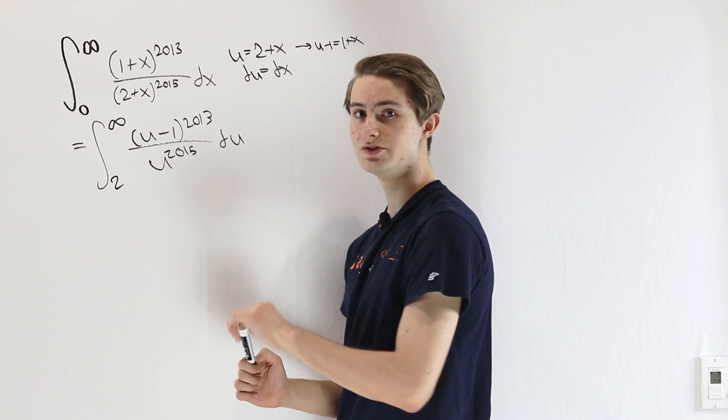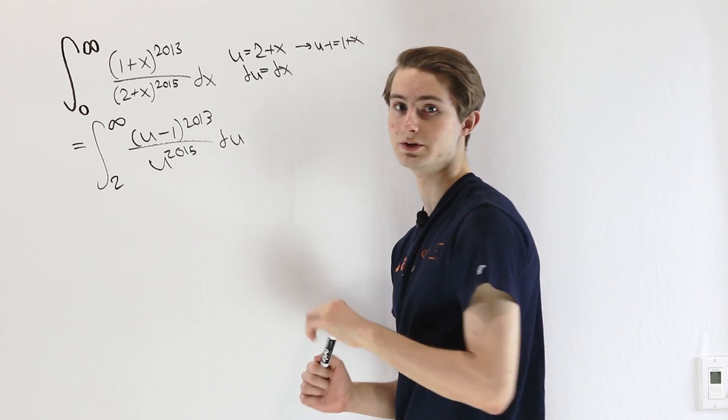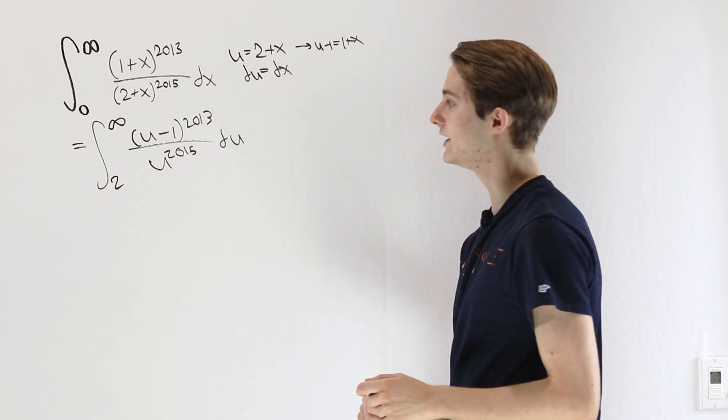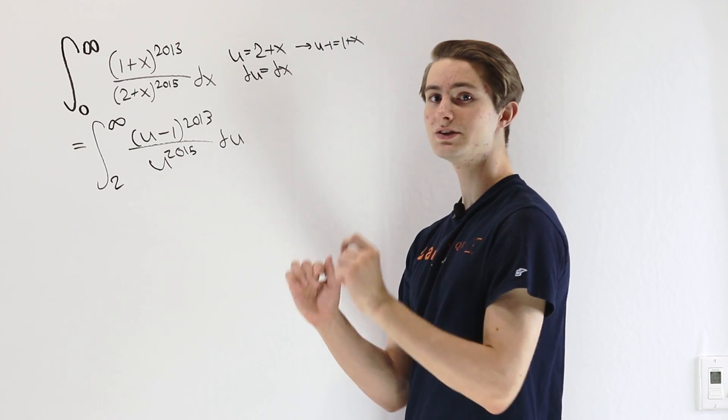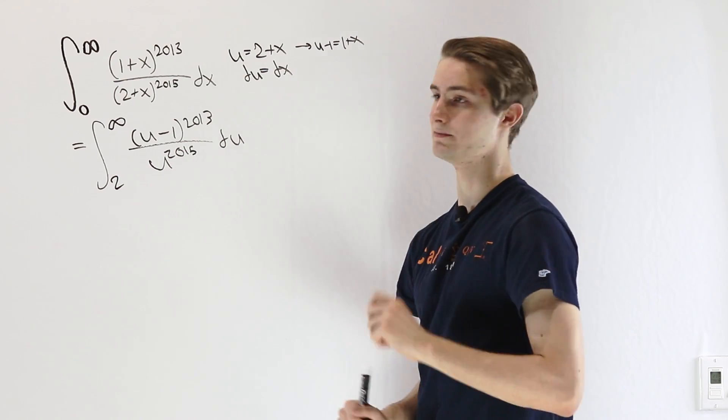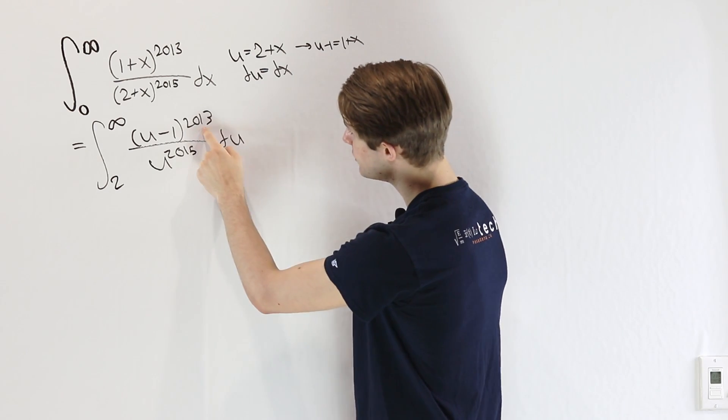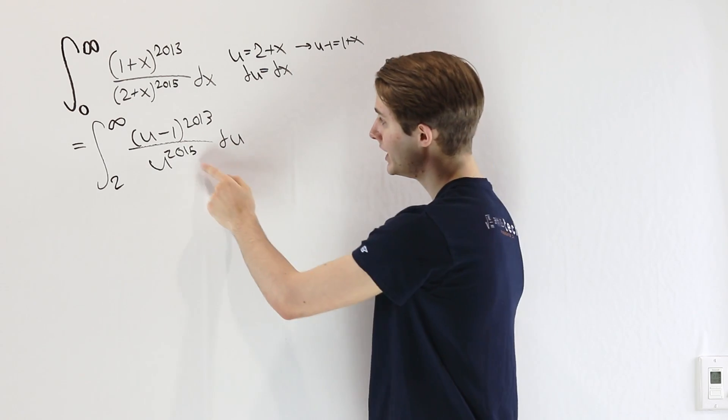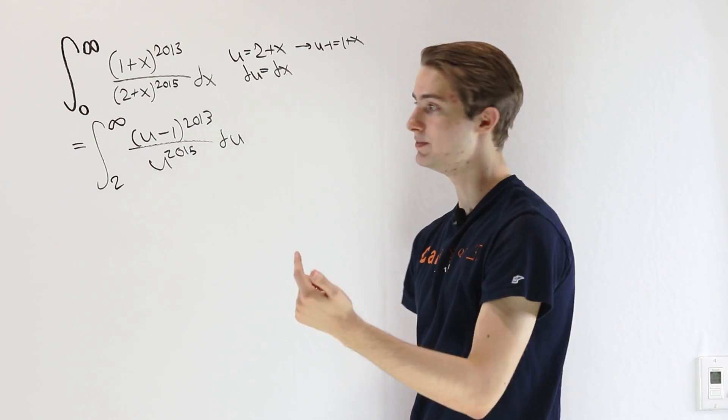So we might want to start looking for a situation where we can do a u-substitution. But in order to do that, we have to have everything inside of the same power. So we have a 2013 power on the top, and this 2015 on the bottom is bigger.